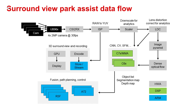This is also referred to as the environmental model. This object information is then fed to fusion, path planning, and control algorithms running on ARM A72 and ARM R5F. These algorithms navigate and park the car autonomously in the parking lot by fusing the environmental information generated by camera, lidar, ultrasonic, and radar sensors. As we can see in this data flow, Jacinto 7 can be used for doing the complete surround view and park assist applications, from surround view visualization to camera perception as well as navigation and control.